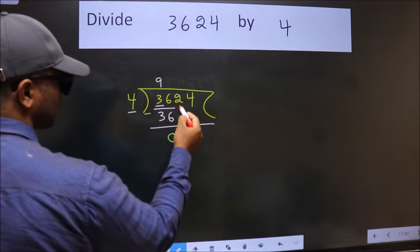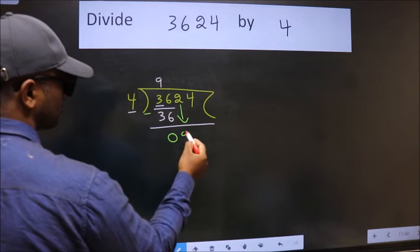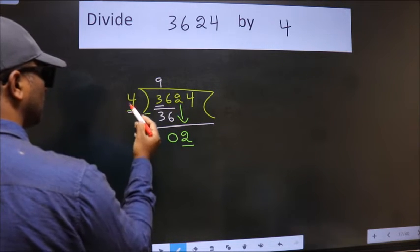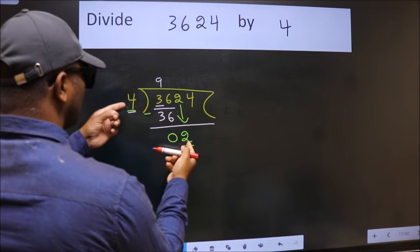After this, bring down the beside number. So 2 down. Now here we have 2, here 4. 2 is smaller than 4.